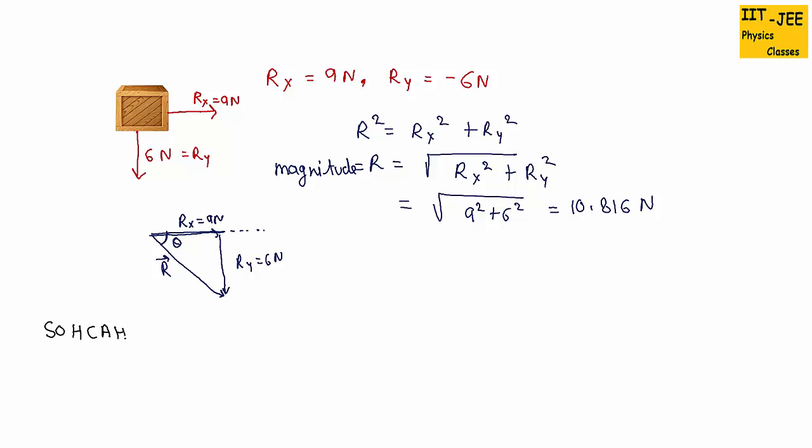SOH CAH TOA. This tells you the formula of tan. Tan equals opposite over adjacent. So this will give us tan theta equals opposite over adjacent. This side is the opposite of angle theta, and this side is the adjacent of angle theta. So opposite is Ry over Rx.